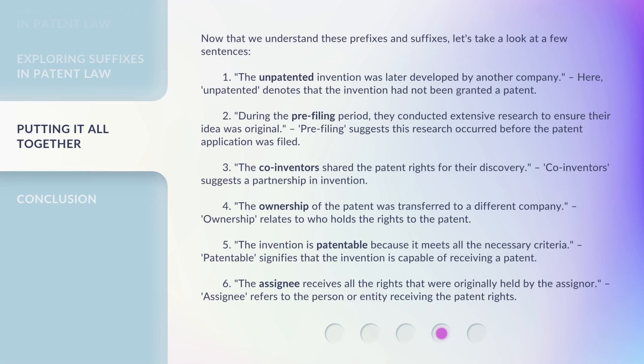Now that we understand these prefixes and suffixes, let's take a look at a few sentences. 1. The unpatented invention was later developed by another company. Here, unpatented denotes that the invention had not been granted a patent. 2. During the pre-filing period, they conducted extensive research to ensure their idea was original. Pre-filing suggests this research occurred before the patent application was filed. 3. The co-inventors shared the patent rights for their discovery. Co-inventors suggests a partnership in invention.